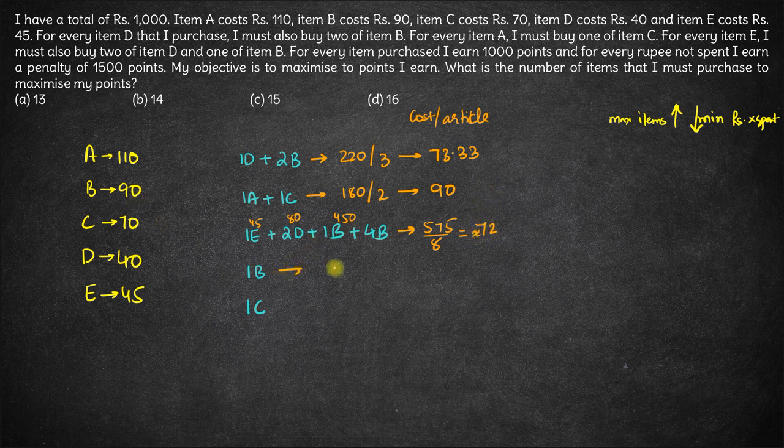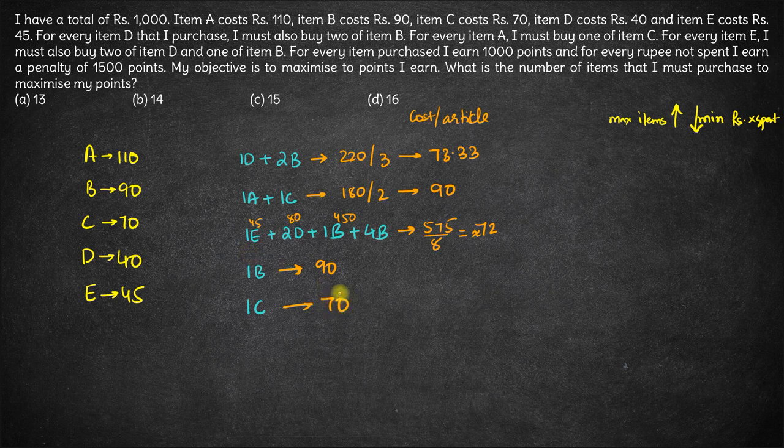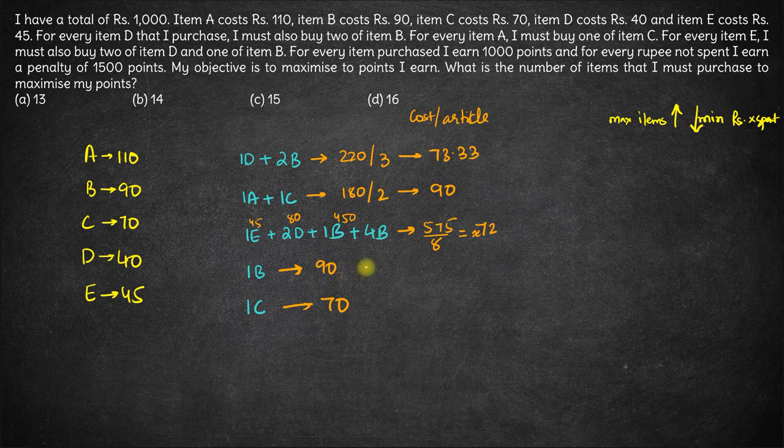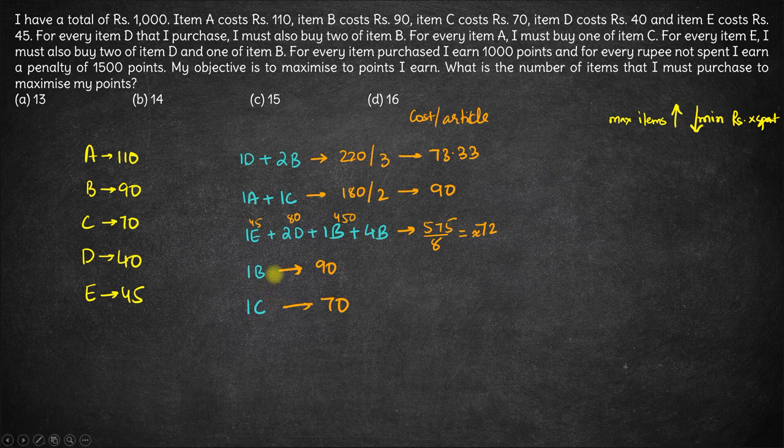Next is article B. B costs only 90 rupees and C costs only 70 rupees. So now if you look at all these, the least price is for article C.